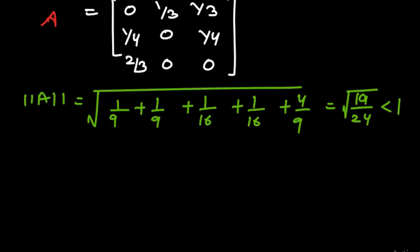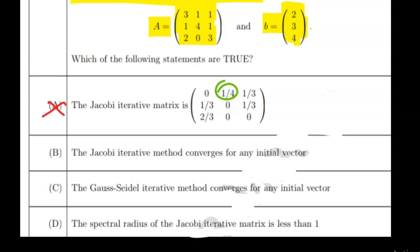Since the norm is less than 1, the Jacobi iterative method converges for all vectors. So option B is correct. When the norm is less than 1, it means the maximum eigenvalue, or the spectral radius, is also less than 1.